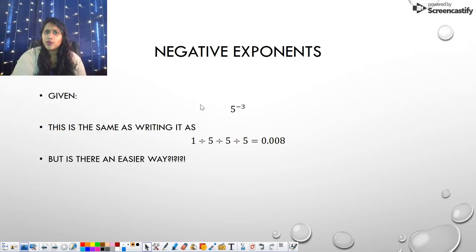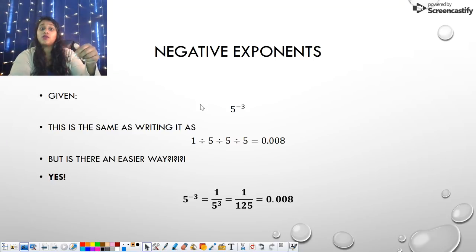But is there a better way to do this? Is there an easier way? Heck yes, and that's the way we're going to do today. So just to show you what this looks like, 5 to the negative 3 is the same as writing 1 over 5 cubed, as you can see down here. Well, we know that 5 cubed is 125, because 5 times 5 times 5 gives me 125. If you plug that into a calculator, you get the same answer, 0.008. So this is proof that the way I teach you is going to be a correct way.